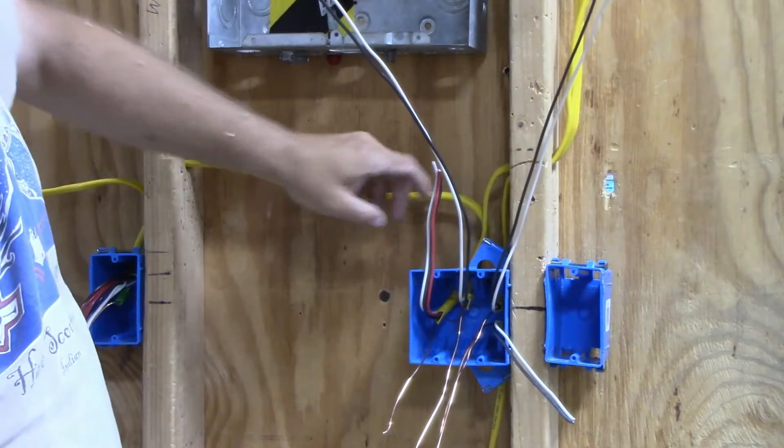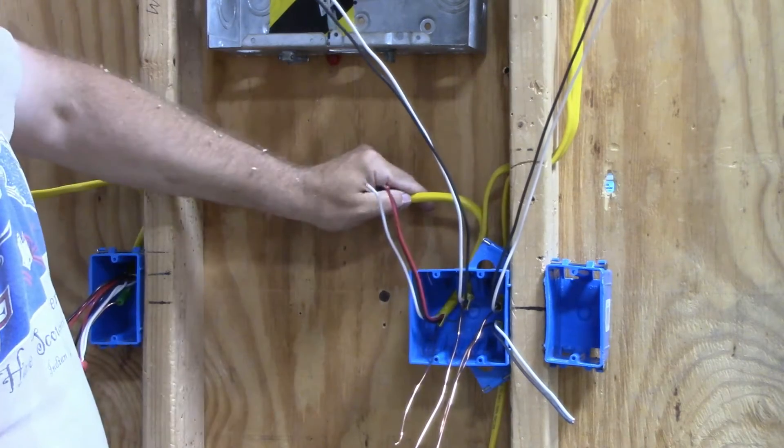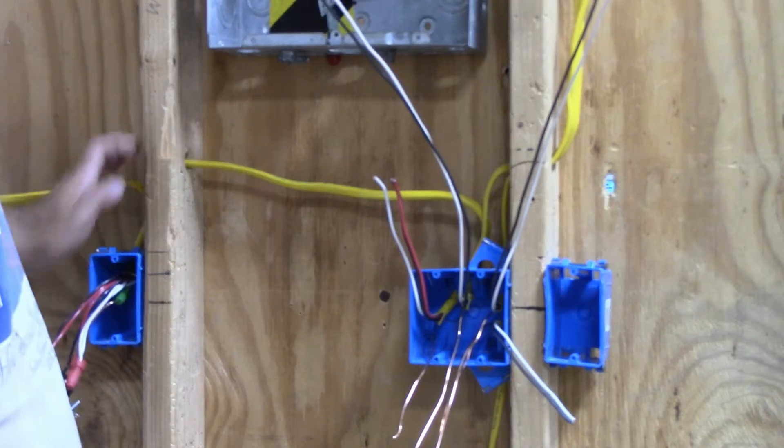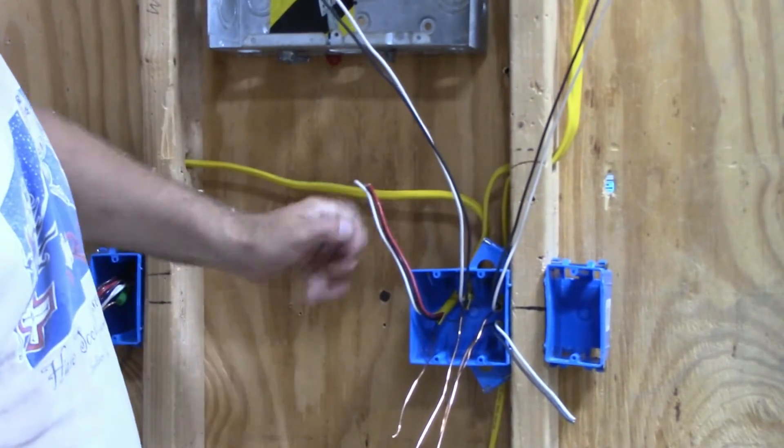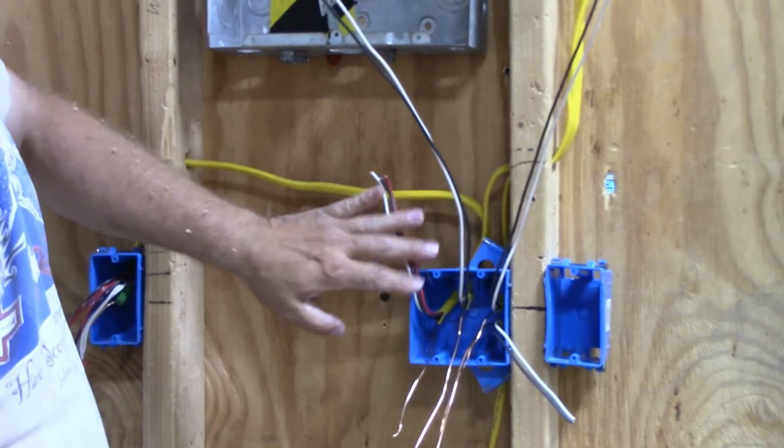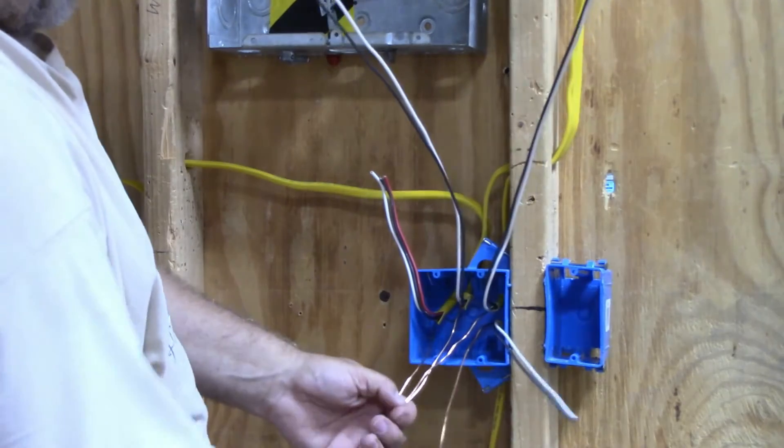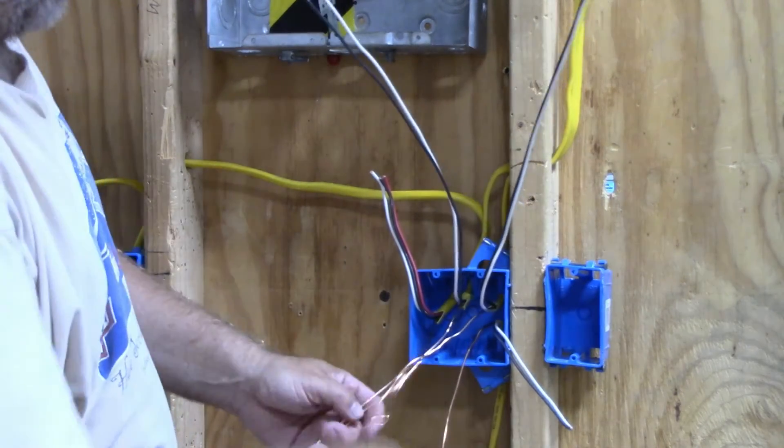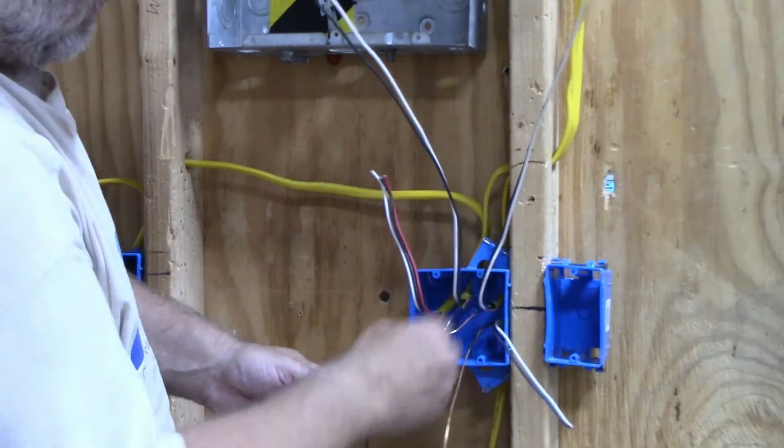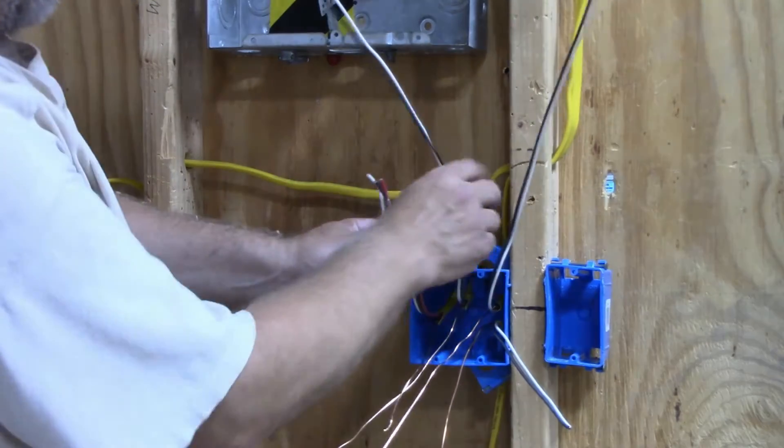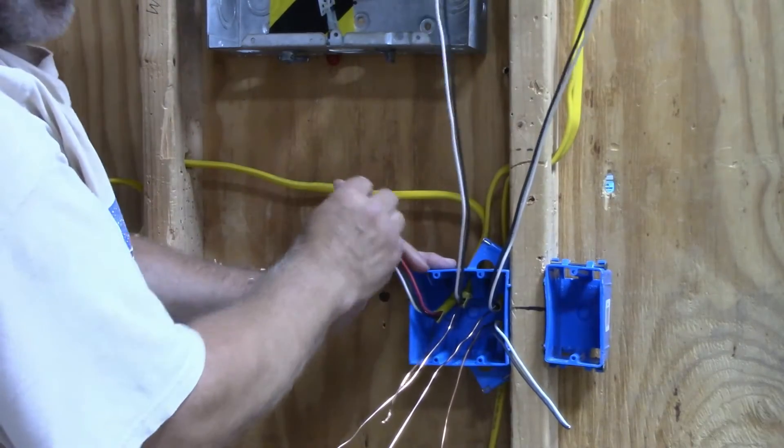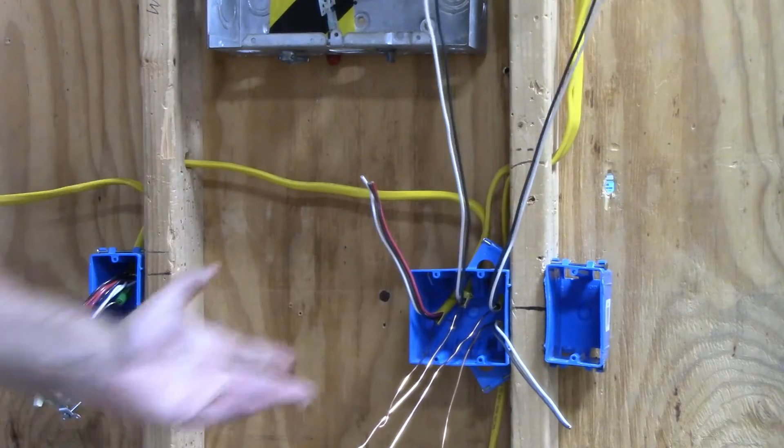The third wire is a three-wire going to a four-way switch where it has to have power in this box. My fourth wire is this one which goes down to an outlet. So I have power coming in, power going out, a switch leg to my light, and a three-wire going to my four-way switch.